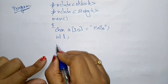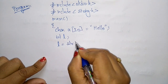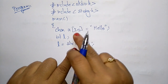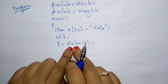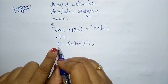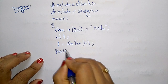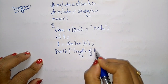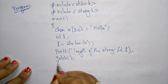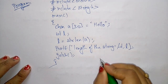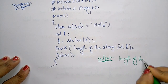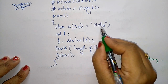I declare int l to store the length of the string. Then l = strlen(a), where 'a' is the string name — strlen counts the total number of characters in the string and stores the result in l. Then I print it: printf("length of the string is = %d", l). The output will be: length of the string is = 5, since "hello" has 1-2-3-4-5 characters.